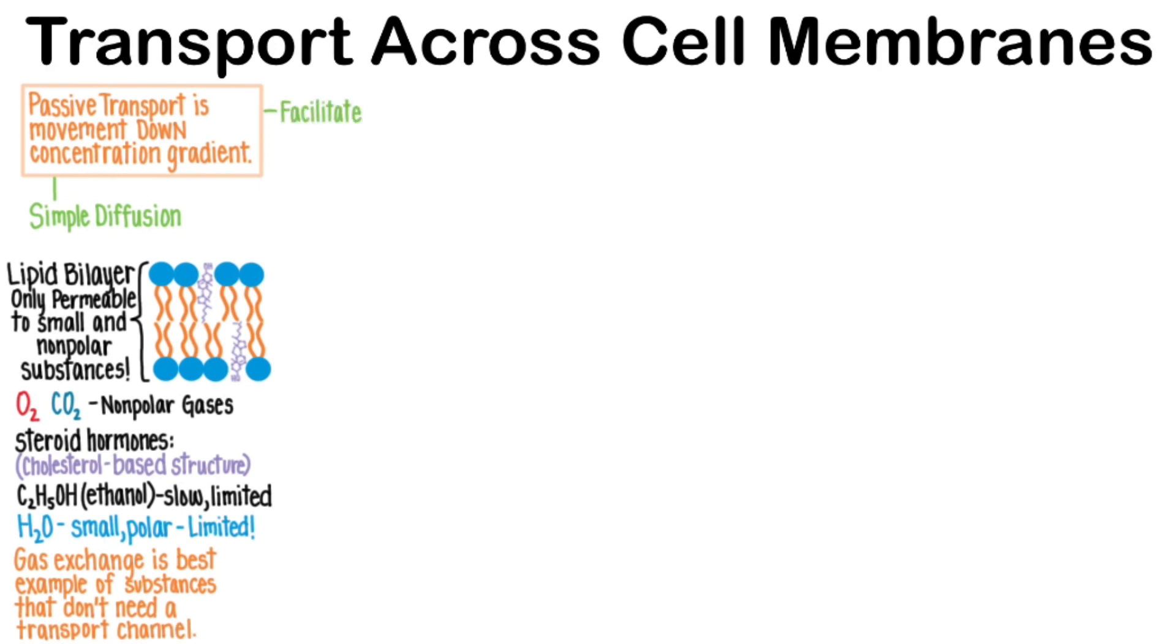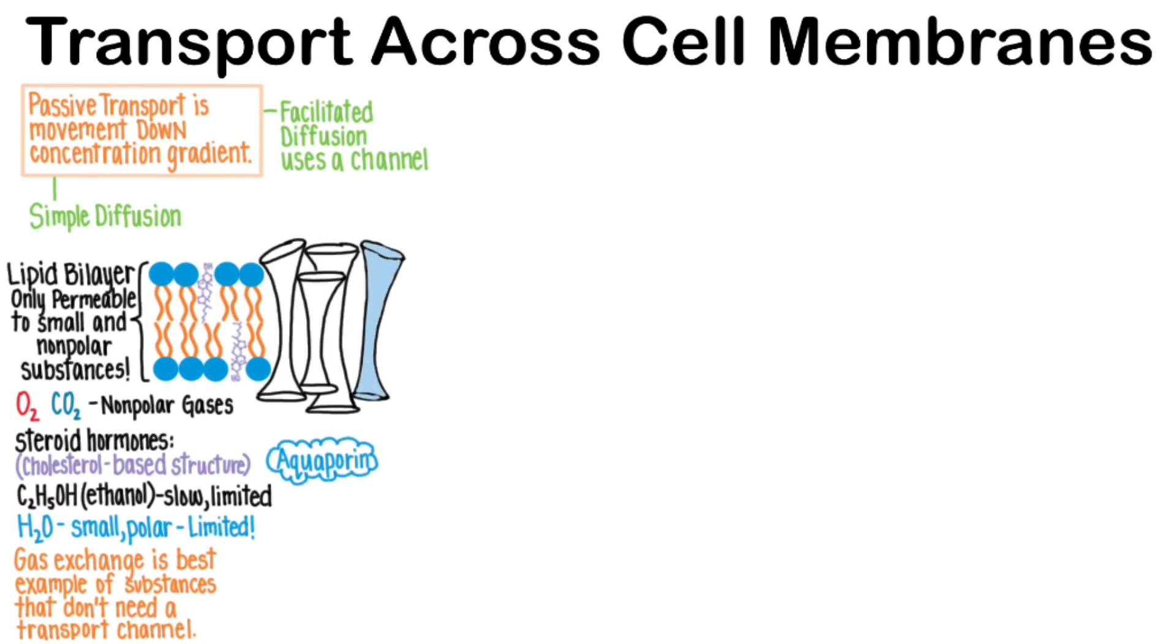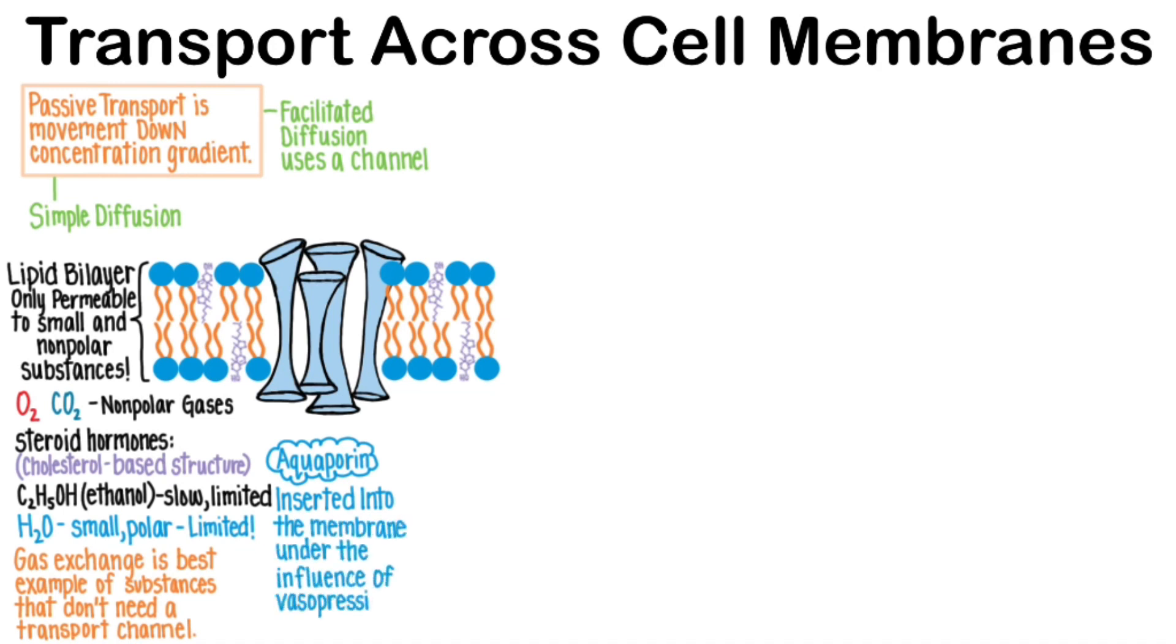Facilitated diffusion is passive transport that uses a channel. Aquaporins are extremely complex channels formed from the coordinated interaction of six different proteins. These are inserted into the membrane under the influence of vasopressin. It allows the body to retain more water, and this raises blood pressure.